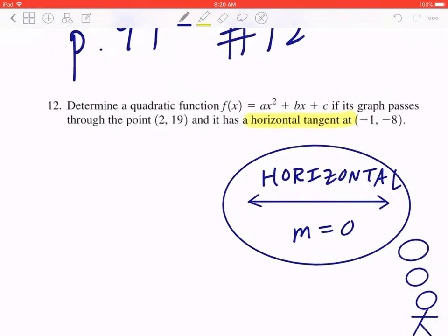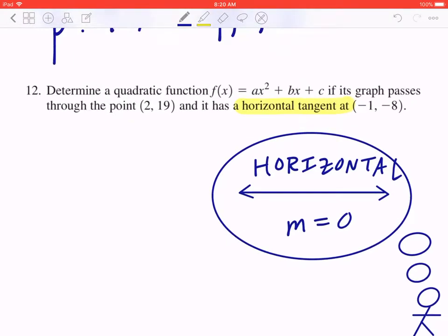So again, if you go back to the question, you're really looking for a, b, and c. Now if you look at the given, one of the points that it passes through is going to be 2, 19.